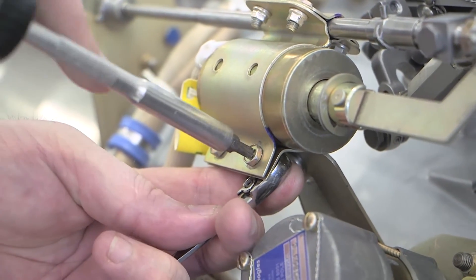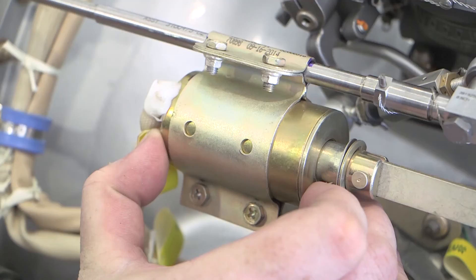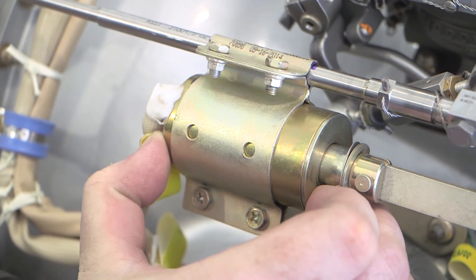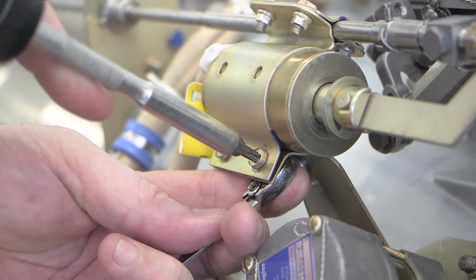Adjust the pull in distance by loosening the solenoid bracket screws and moving the solenoid with the bracket to obtain the proper position. Retighten the hardware and secure.